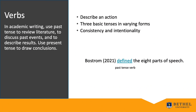The last part of speech is a verb. Verbs describe an action. We have three verb tenses — past, present, and future — explained in varying forms in the primer. Make sure you use the same verb tense within a paragraph and section of your paper. When writing about the work of others in a literature review, use a past tense verb following the date of publication. For example: 'Bostrom (2021) defined the eight parts of speech.' The verb 'defined' needs to be in the past tense.